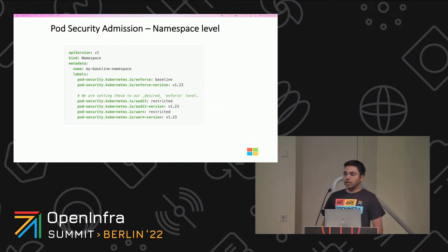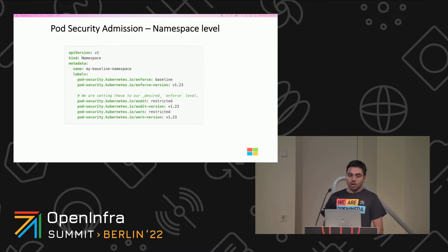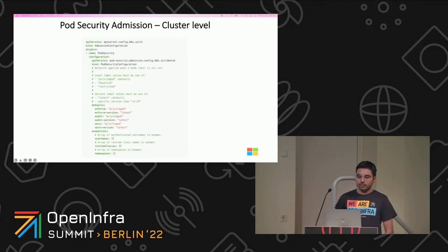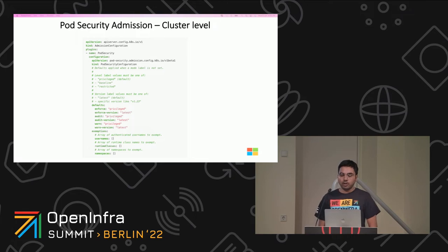Here's an example for enabling pod security admission at the namespace level. This manifest defines a namespace called 'my-baseline-namespace', and it blocks any pods that don't satisfy the baseline policy requirements, generates a user-facing warning and adds an audit annotation to any created pod that does not meet the restricted policy requirements, and pins the version of the baseline and restricted policies to 1.23. Here is an example for enabling pod security admission at the cluster level. As of v1.22, Kubernetes provides a built-in admission controller to enforce the pod security standard, and you can configure this admission controller to set cluster-wide defaults and exemptions.